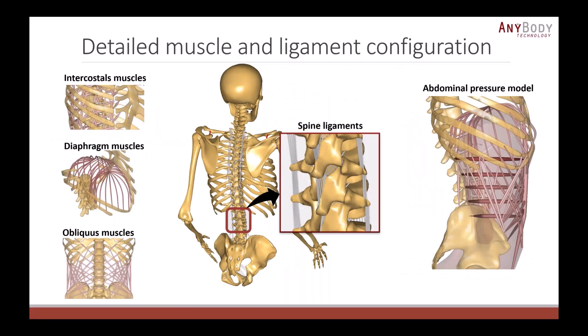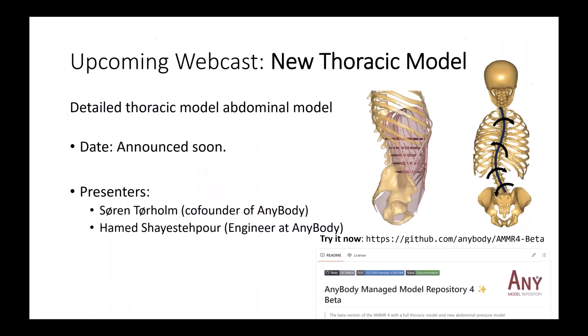The new thoracic model has a very detailed muscle configuration and ligaments. For example, there are all the intercostal muscles, we have the diaphragm muscles, we have the oblique muscles. All along the spine, you can enable spinal ligaments if you really need ligaments. And then of course, there is this new abdominal pressure model where all the abdominal muscles provide pressure to support the abdominal pressure, which is then transferred up to the lungs and the thoracic part.